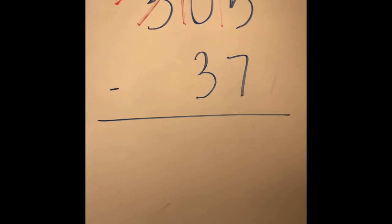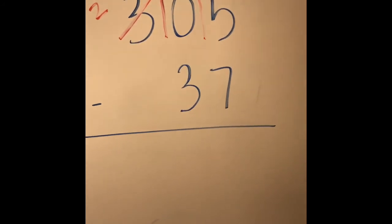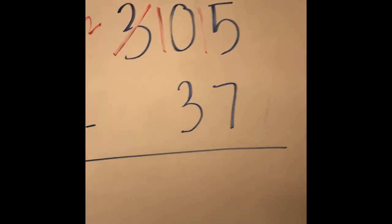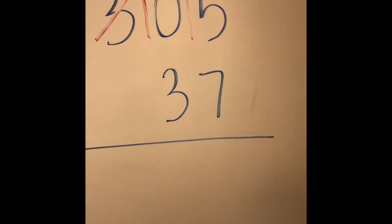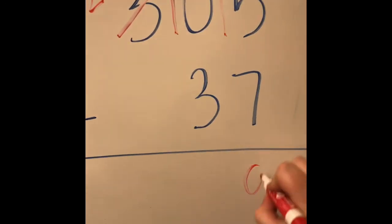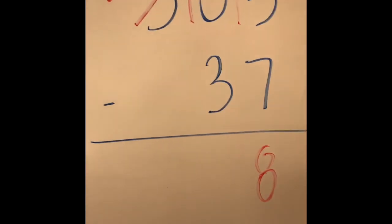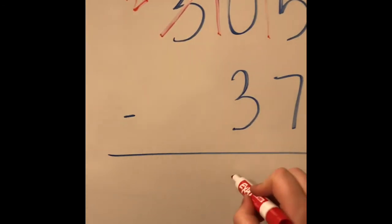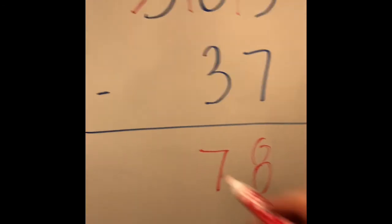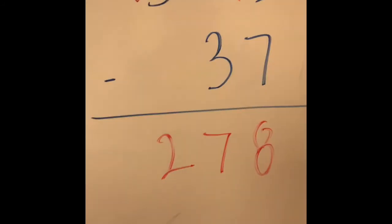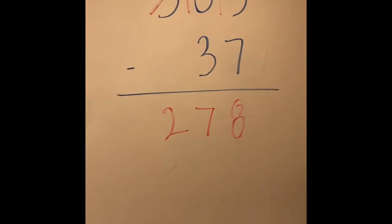So now we can subtract because fifteen is greater than seven. So fifteen minus seven is eight, and then ten minus three is seven, and then you drop the two down, so your answer is two hundred and seventy-eight.